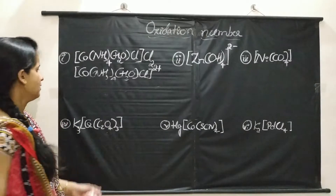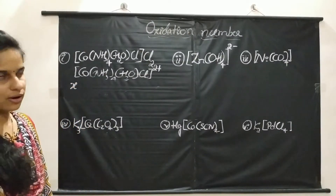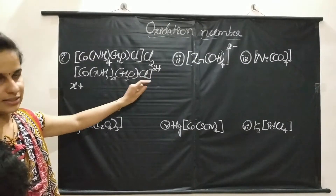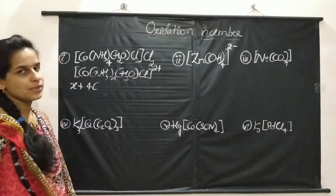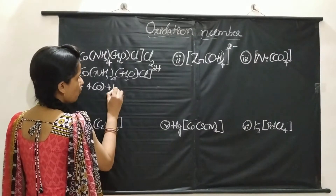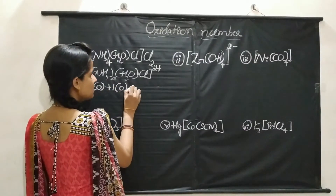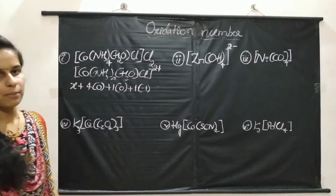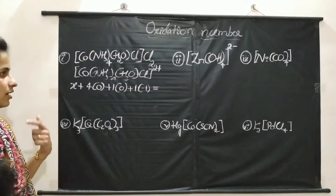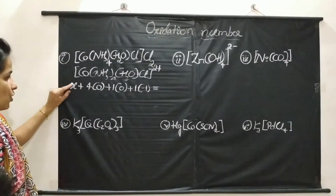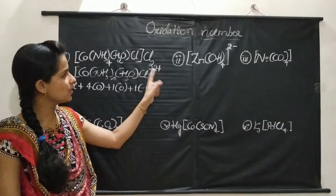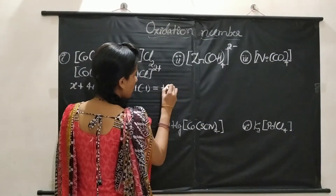Second step: writing the equation. The oxidation number of the central metal atom plus the charge on all the ligands — 4 NH3 ligands (ammonia is a neutral ligand, so charge is 0), plus H2O (also a neutral ligand), plus 1 Cl⁻ ligand (charge minus 1) — is equal to the charge on the coordination sphere, which is plus 2.